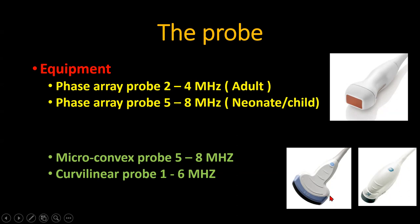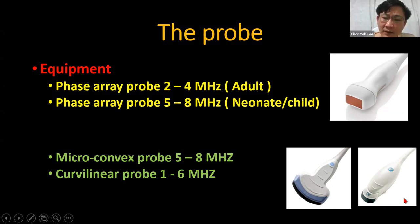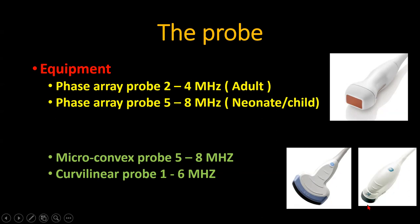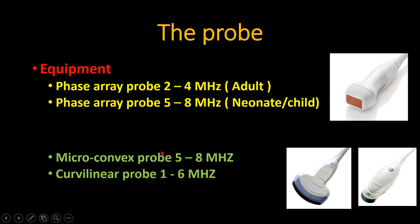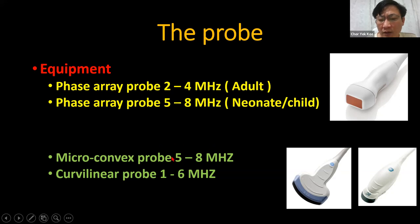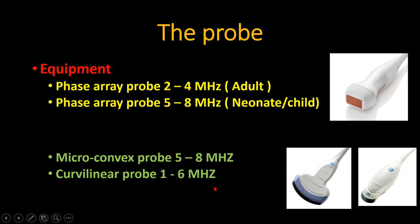For pediatric or premature babies, you can also use a microconvex probe. We have a curvilinear probe in the ICU and a microconvex probe in the neonatal unit. The difference is frequency: the microconvex, the small one, usually has a higher frequency and can see superficial structures very well. The curvilinear is an abdominal probe with lower frequency — lower frequency probes penetrate deeper structures much better.